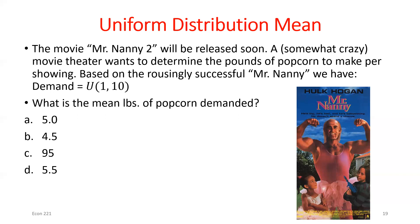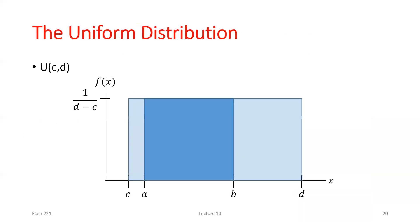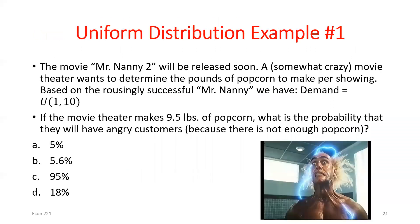For the uniform distribution, every interval of the same length has the exact same probability. If I find the probability for one interval of length 0.5, I automatically know the probability for every other interval of length 0.5 within the max-min range. So we can enter those values: height × width gives us our probability — roughly 5.6%.